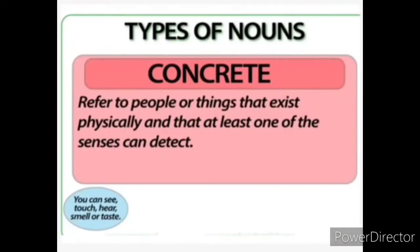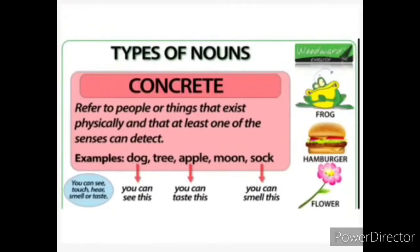Now we are going for the next one: concrete noun. Concrete nouns refer to people or things that exist physically and that at least one of our senses can detect. For example, 'dog' — we can see it physically. 'Tree.' 'Apple' — we can taste it; we can see and taste it. 'Moon.' 'Soap' — we can smell it. So any particular sense will act on these. Concrete nouns means things we can physically see, taste, or smell.